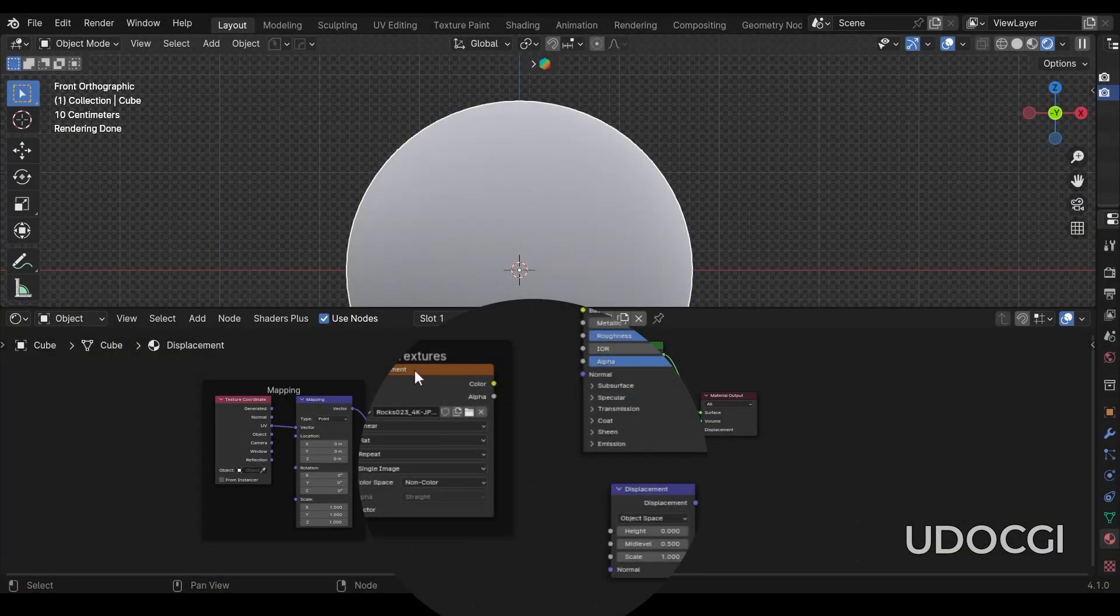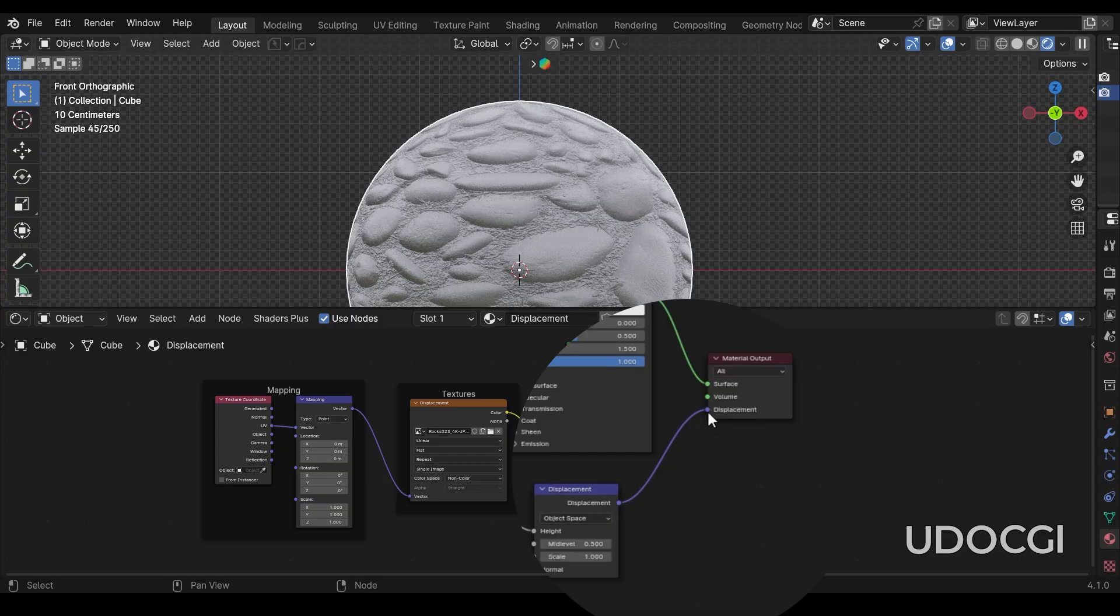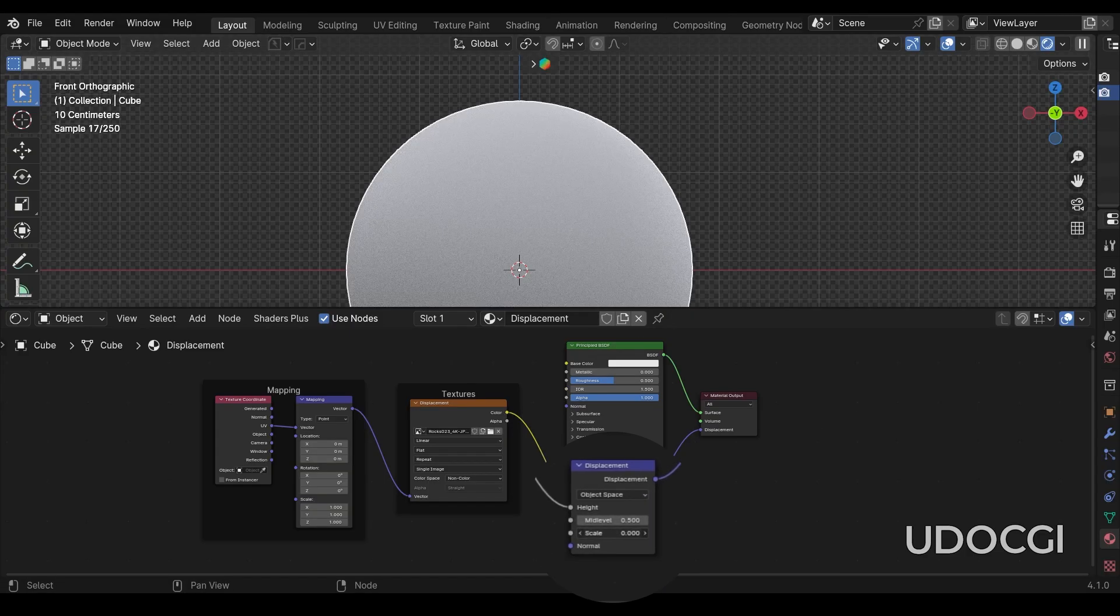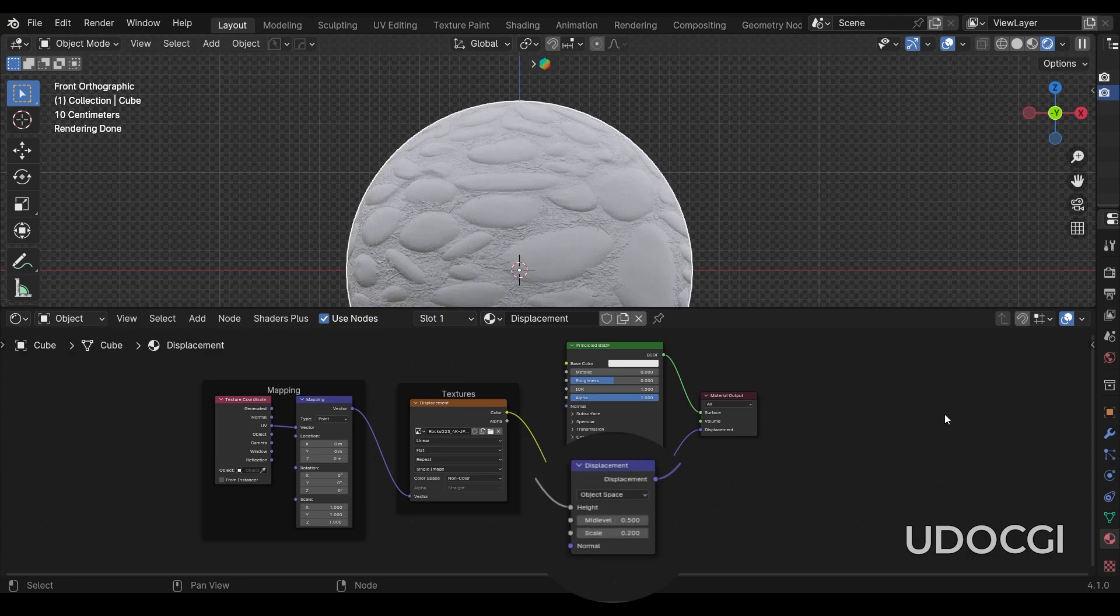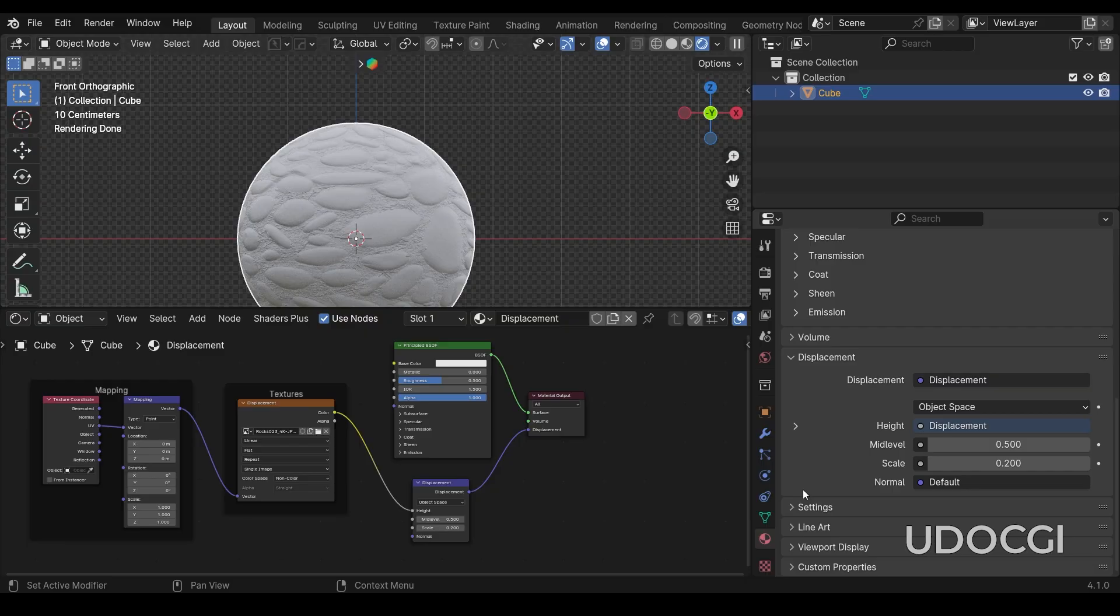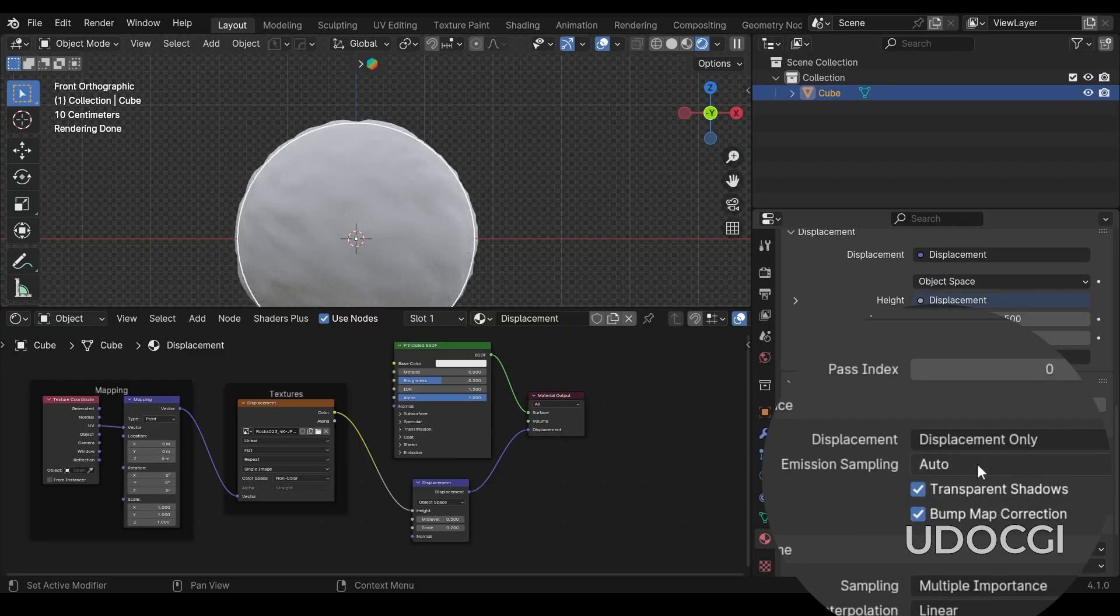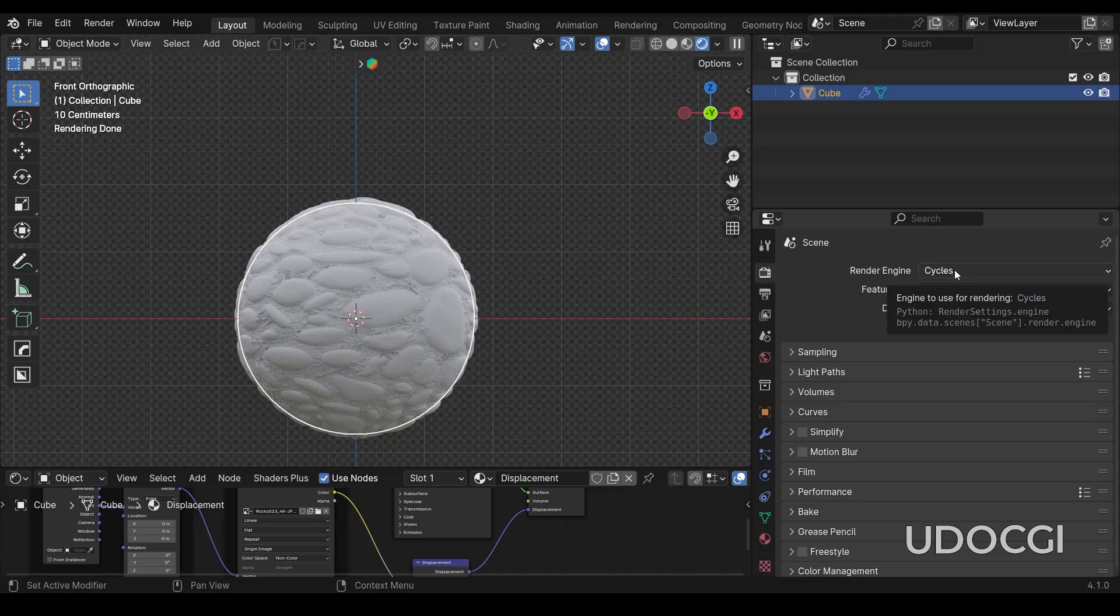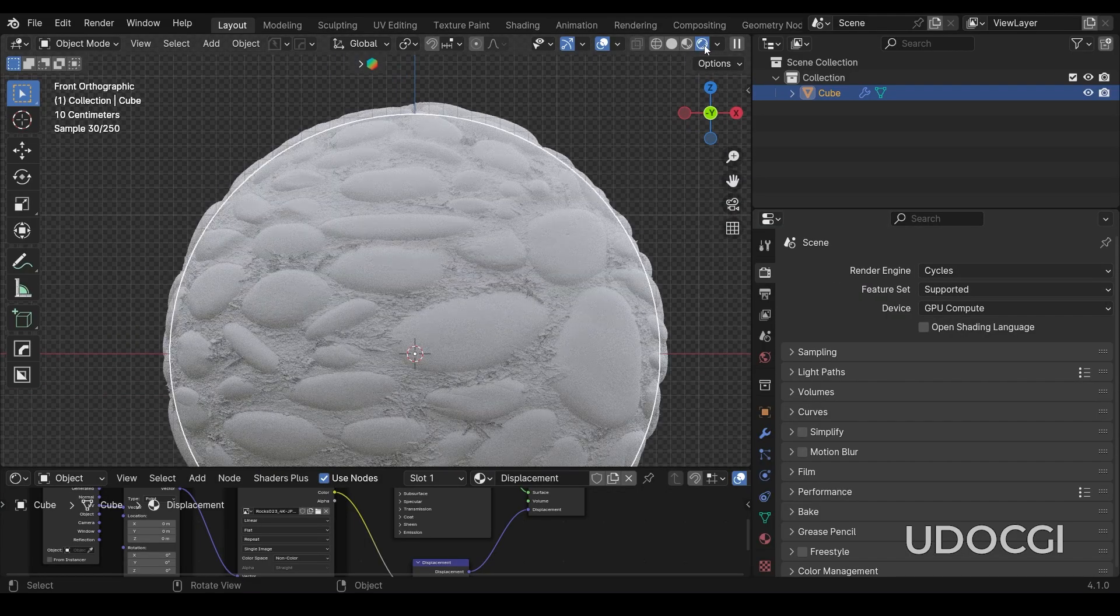To use a height map for displacement, plug the height map into the height input of a displacement node and connect this node to the displacement input of the material output node. You can adjust the strength of your displacement using the strength parameter in the displacement node. Ensure that you set the displacement method. In the latest versions of Blender, choose displacement only or displacement and bump. Before, these methods only worked in Cycles render engine, but now they are also available in Eevee.